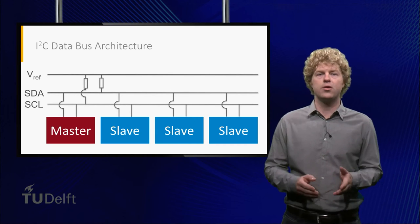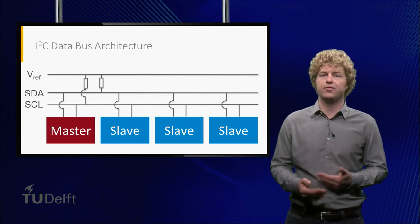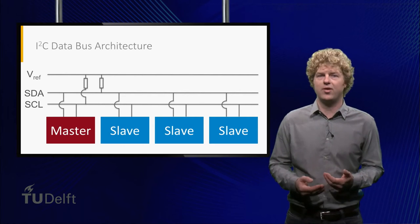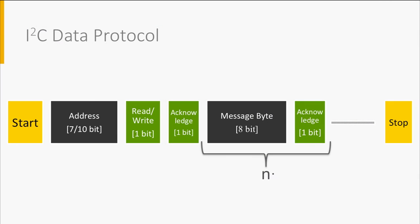CubeSats are satellites of one or multiple units of 10 cm cubed. I2C is for instance implemented in the successful DelFi-C3 and DelFi-Next CubeSats, which are developed and operated at TU Delft. Each data message starts with a start condition from the master, followed by a 7 or 10 bit address of the slave device. The write bit tells the slave whether it will receive data or needs to return data. The slave then needs to acknowledge that it is addressed and ready for the next action. Then the actual data or return data follows, acknowledged after each byte. The message length can be up to 255 bytes. The message ends with the stop condition from the master.